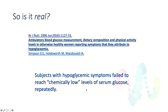From 2006: ambulatory blood glucose measurement, dietary composition, and physical activity levels in otherwise healthy women reporting symptoms they attribute to hypoglycemia. The conclusion: subjects with hypoglycemic symptoms failed to reach chemically low levels of serum glucose repeatedly. So the first study says insulin may not be related to the findings, and this study says that chemically low levels of glucose may not be related to that sympathetic overdrive either.